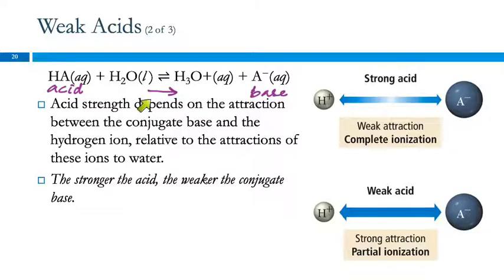If we have a weak acid where we have this going in both ways in equilibrium here, then we have a stronger attraction between the A minus and the H plus. And so the A minus is able to hold on to the hydrogen ions. And so we have some of these molecules that are intact and some that are ionized. So the stronger the acid, the weaker the conjugate base.